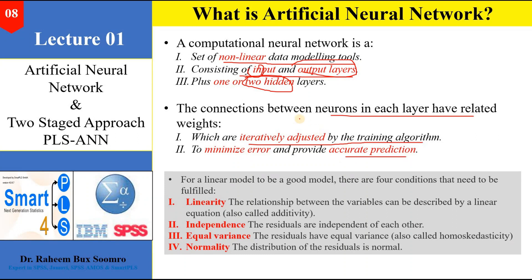ANN attains different weights to each individual variable. For non-linear relationships — even if there is no linear relationship between variables — you can still apply the ANN approach. Also, even if your data is non-normal, you can apply ANN because we separate data into two forms: parametric data, which meets standard assumptions, and non-parametric data, which does not meet those assumptions. The ANN approach can work on non-parametric data sets as well.